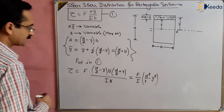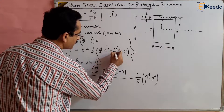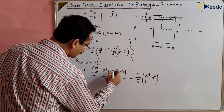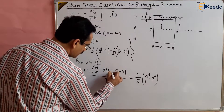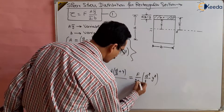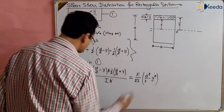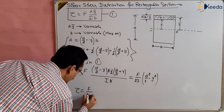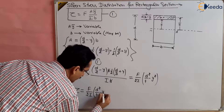There is a correction: ȳ is half of (D/2 + y), so a factor of one-half is missing, giving a denominator of 2I. The b terms cancel, and we arrive at: tau = F / (2I) × (D²/4 − y²). So the shear stress at any point on the rectangular section is tau = F/(2I) × (D²/4 − y²).